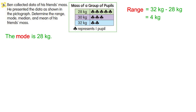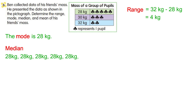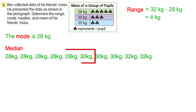Now find the median. To find the median, arrange the mass according to ascending order: 5 pupils with a mass of 28 kilograms, 3 pupils with a mass of 30 kilograms, and 2 pupils with a mass of 32 kilograms. Find the data located in the middle — we have 2 middle values: 28 and 30. So 28 plus 30 divided by 2, the answer will be 29 kilograms. The median is 29 kilograms.